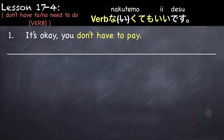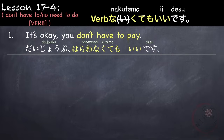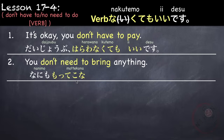For example, 'It's okay, you don't have to pay.' Daijoubu, harawanakute mo ii desu. Our verb is pay — haraimasu — which becomes harawanai, remove i, add nakute mo ii desu. Another example: 'You don't need to bring anything.' Nanimo motte konakute mo ii desu. The verb motte kimasu becomes motte konai, remove i, add nakute mo ii desu.